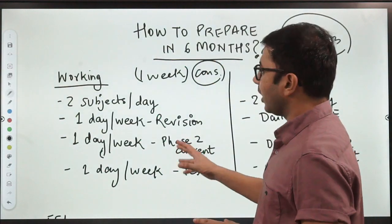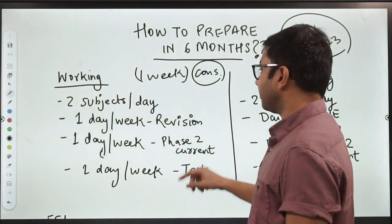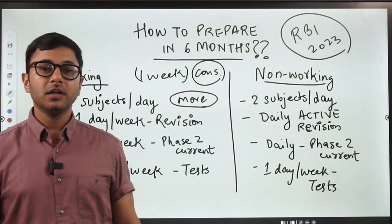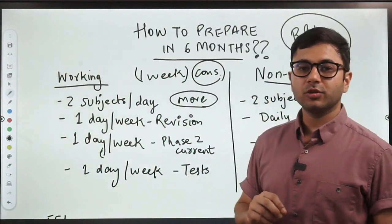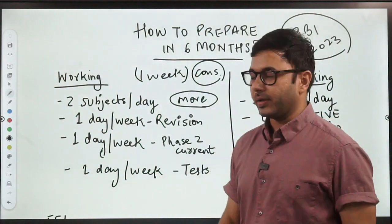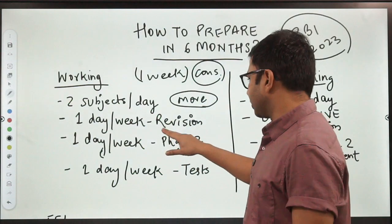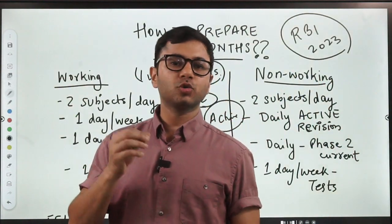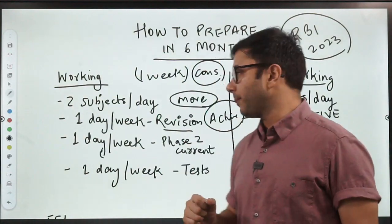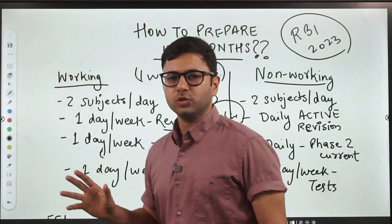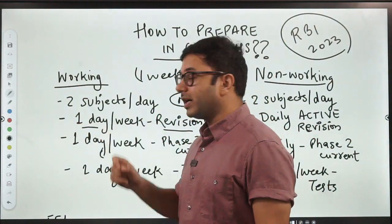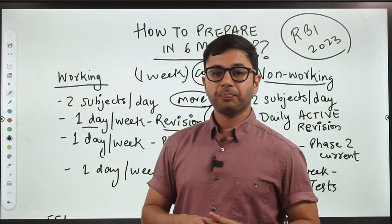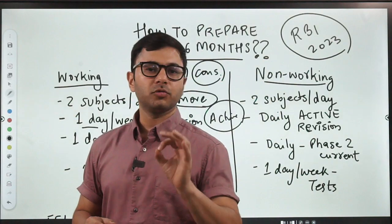For working aspirants, what do you do in a week? Number one, you always cover two subjects per day. You never cover more than two subjects per day. You can probably try covering one subject also in one day, but never more than two. Number two, one day per week is for revision, and by revision, I mean active revision. I've already talked about active revision in another YouTube video. I will put a link in the description. One day per week is for revision. No matter how much you cover, even if you cover 10 pages, you have to take out one day every week for revision.